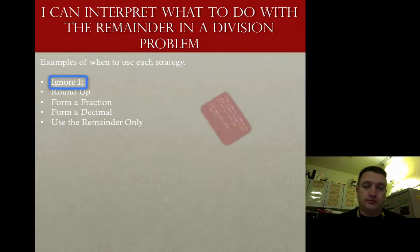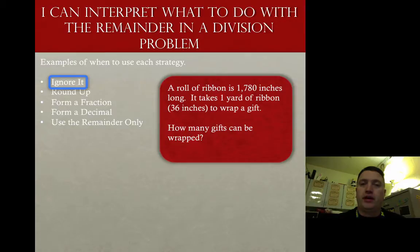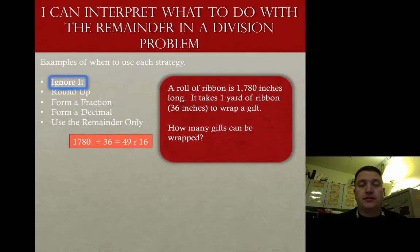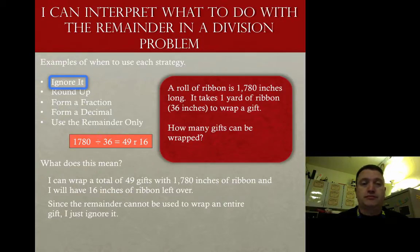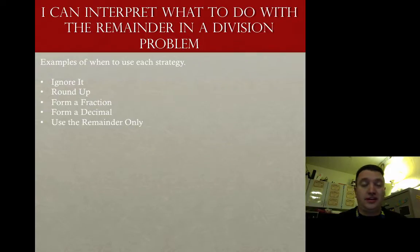Let's start with ignore it. A roll of ribbon is 1,780 inches long. It takes one yard of ribbon, which is 36 inches, to wrap a gift. How many gifts can be wrapped? If I take 1,780 divided by 36, that's 49 with a remainder of 16. What it means is I can wrap 49 gifts with my 1,780 inches of ribbon, and I'll have 16 inches of ribbon left over. Since the remainder can't be used to wrap an entire gift, I just ignore it. So I can wrap a total of 49 gifts and just get rid of the other 16.